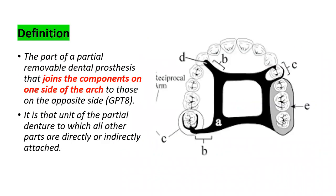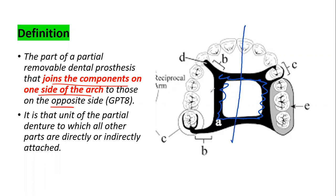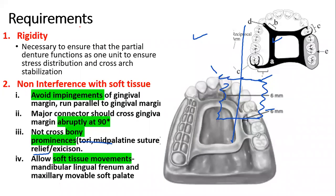We had already covered the definition, where we studied that the major connector is the part of the removable dental prosthesis that joins the components on one side of the arch to the opposite side of the arch. It is the unit of the partial denture to which all other parts are directly or indirectly attached — the minor connector, the direct retainer, and the denture base are all attached to it.